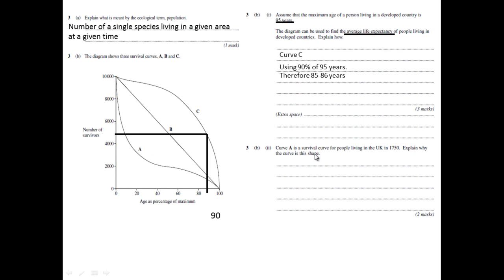The final question asks, Curve A is a survival curve for people living in the UK in 1750. Explain why the curve has this shape. What we can see here is this dramatic drop off of the number of survivors and what is happening is people are dying and so therefore, one of the things you could say is it has a high mortality rate or a high death rate and then the second mark is simply quoting a cause of this.